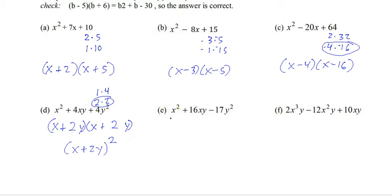So give letter E a try. Hit pause now. And there you go. That's what you should have had. So 17 times negative 1 would give you negative 17. And 17 minus 1 would give you 16. And if you're saying, well, the middle term is xy, multiply it out, and you'll see why the middle term is xy.